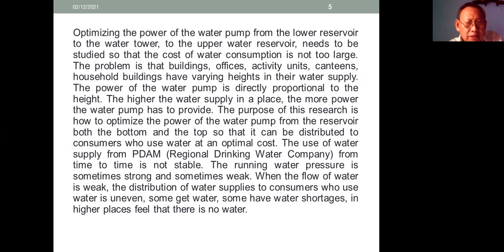The use of water supply from PDAM, regional drinking water company, from time to time is not stable. The running water pressure is sometimes strong and sometimes weak. When the flow of water is weak, the distribution of water supplies to consumers is uneven. Some get water, some have water shortages. In high places, there is no water, no water pressure.